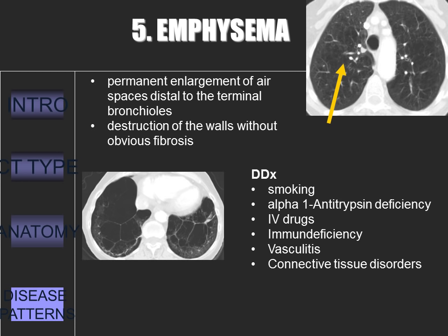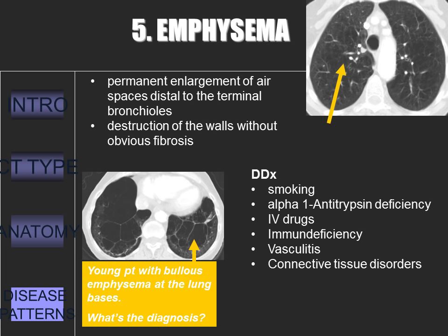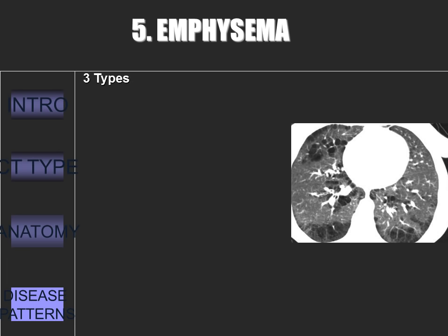Emphysema is the permanent enlargement of the air spaces distal to the terminal bronchioles and destruction of the walls without obvious fibrosis. The differential includes smoking, alpha-1 antitrypsin deficiency (often seen in young patients at the lung bases), immunodeficiency syndromes like PCP and HIV, and connective tissue disorders like Marfan's or Ehlers-Danlos. High res CT is more sensitive and highly specific for diagnosing emphysema than conventional radiography. However, the information gathered from CTs does not alter therapy, and thus CT scans are not part of the routine care of patients with COPD.